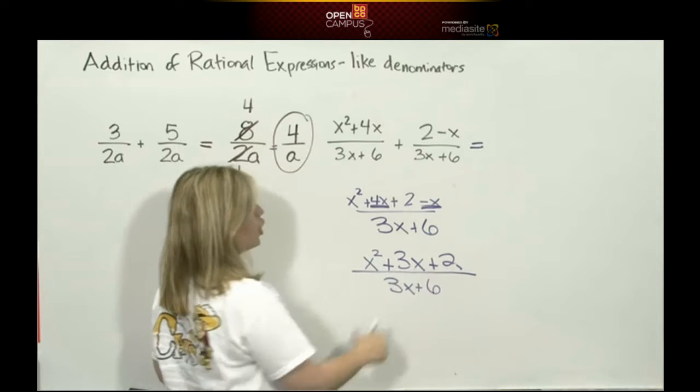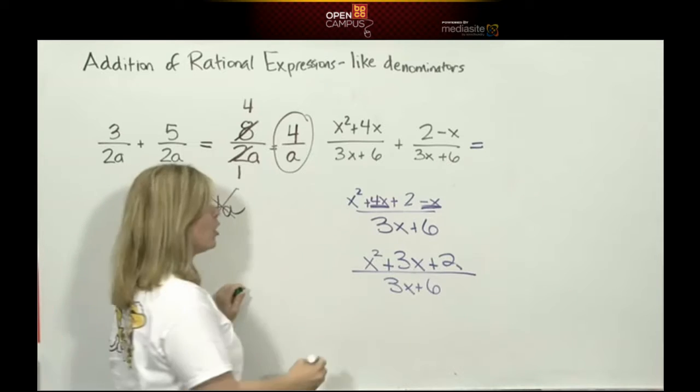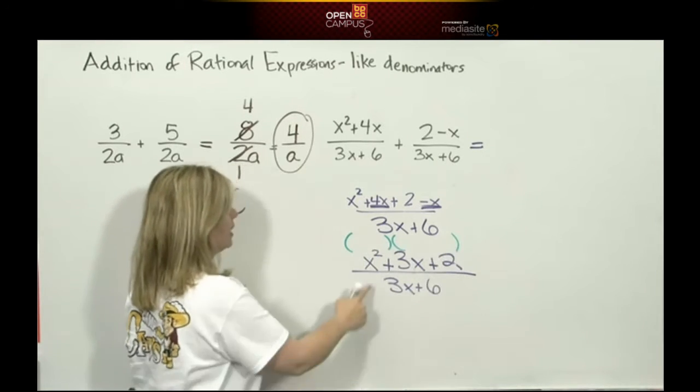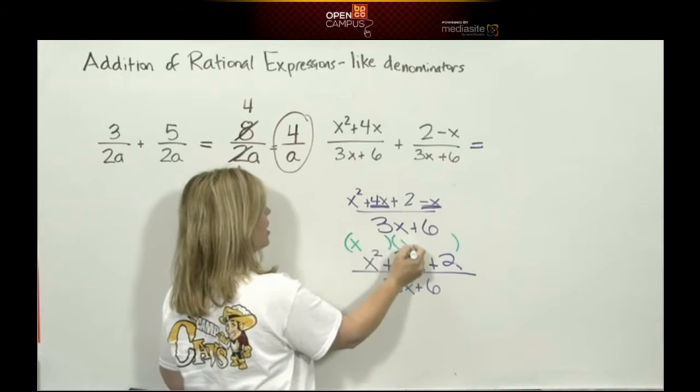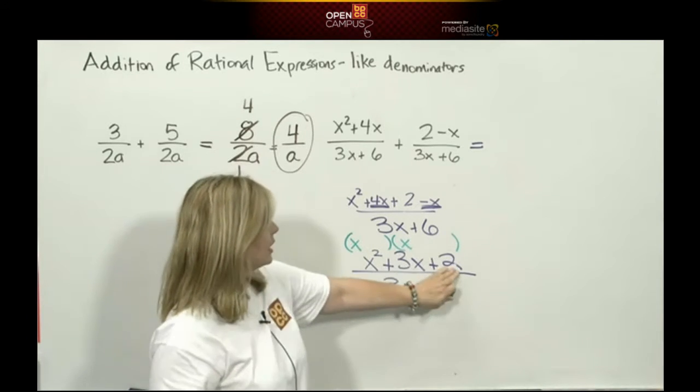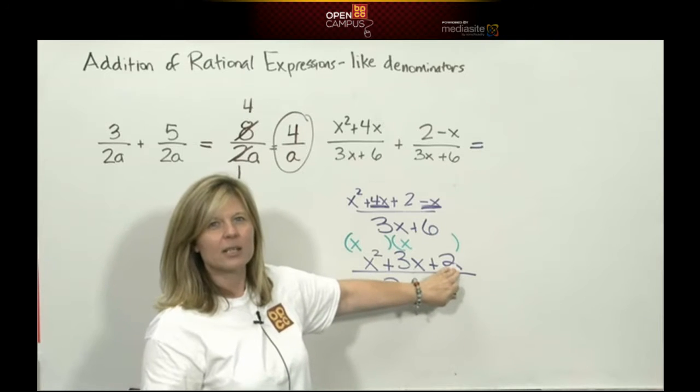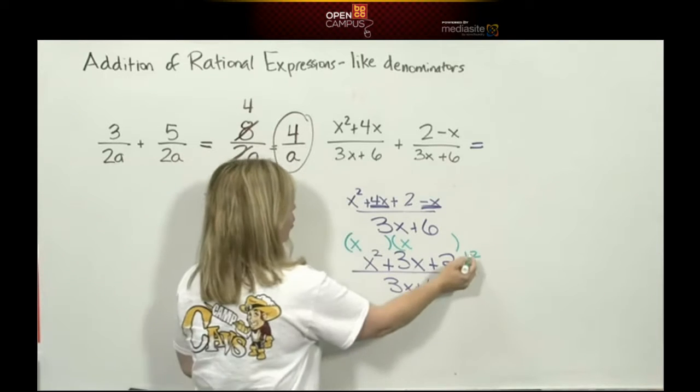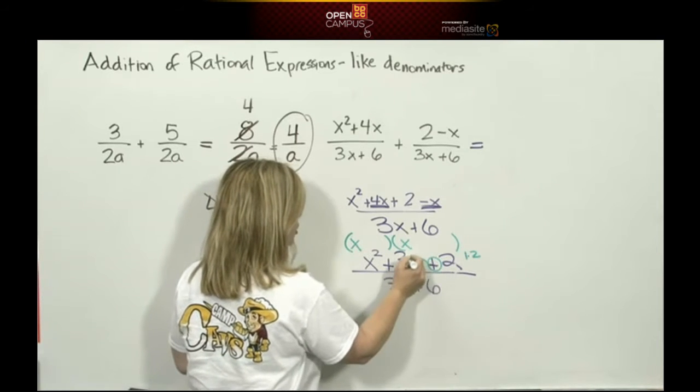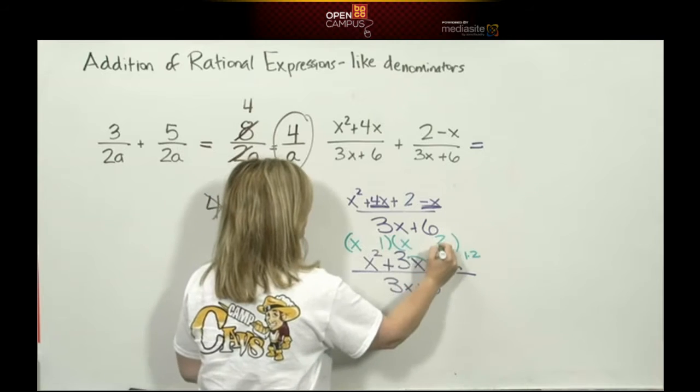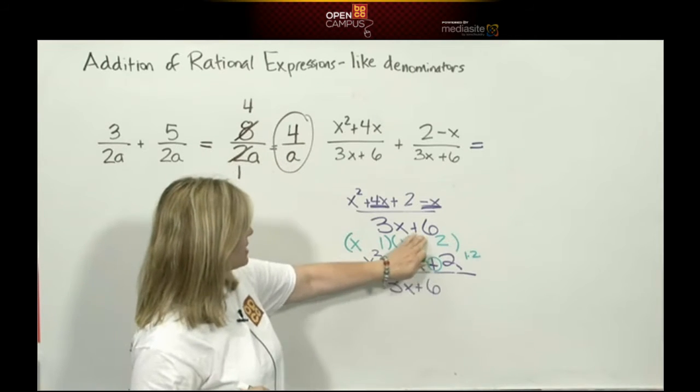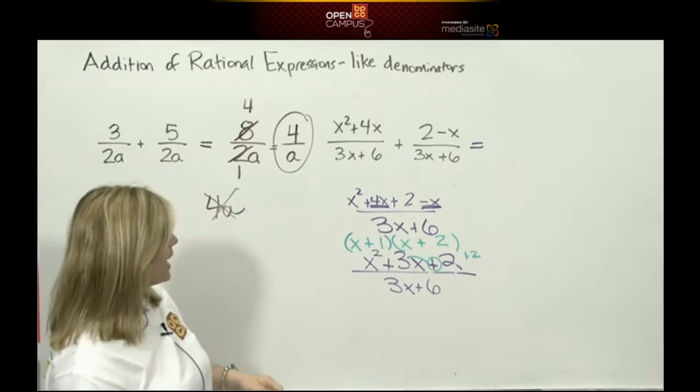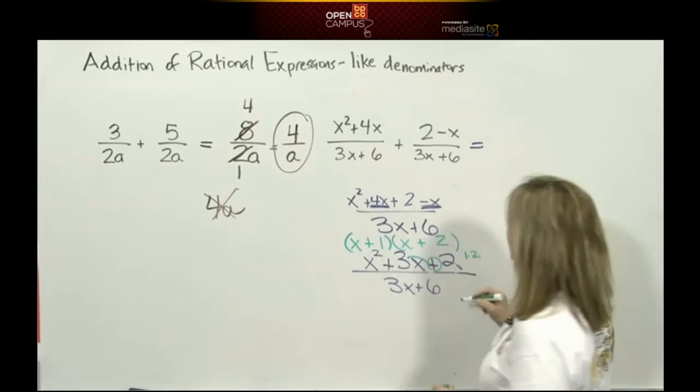The first term is x squared, it's easy, that's x times x. The last term is 2, well that's easy, the only thing that multiplies to 2, the only factors are 1 and 2. Will 1 and 2 add to 3? Sure will. If I add, my signs have got to be the same, adding to a positive, they're both positive. So now I can replace my numerator with the factored form, which is x plus 1 times x plus 2.